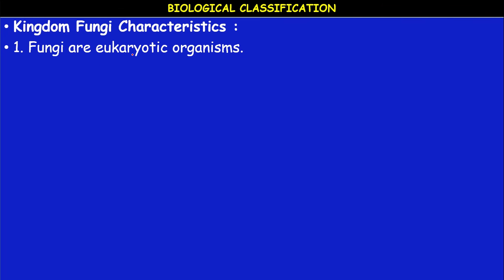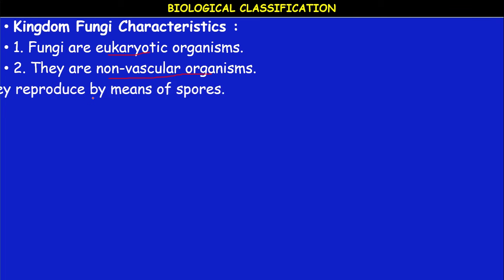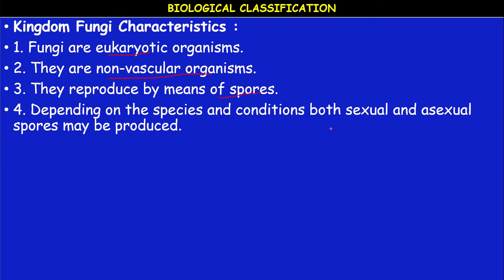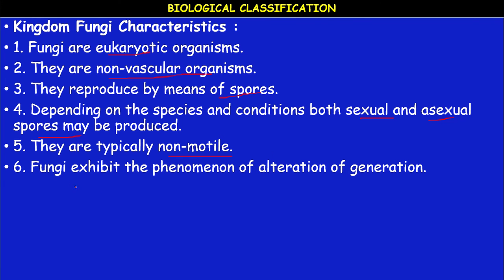Characteristic features of fungi: they are eukaryotic, non-vascular organisms with no xylem, phloem, or any vessels. They reproduce by means of spores — both sexual and asexual reproduction occur. They are typically non-motile and exhibit alternation of generation, alternating between sporophyte and gametophyte forms. The sporophyte produces sporangia and spores such as sporangiospores and conidiospores, while the gametophyte produces male and female gametes.